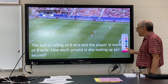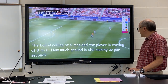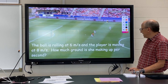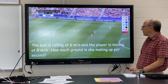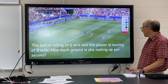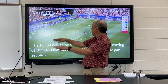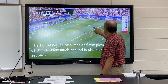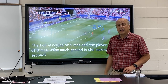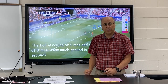Here we have a soccer ball rolling at 6 meters per second and a player running at 8 meters per second. We want to know how much ground they're making up in 2 seconds. Since they're going the same direction, it would be 2 meters per second — every second, they gain 2 meters on the ball.